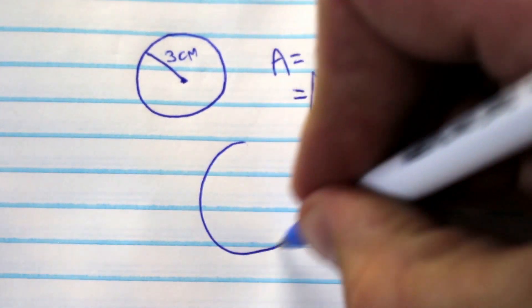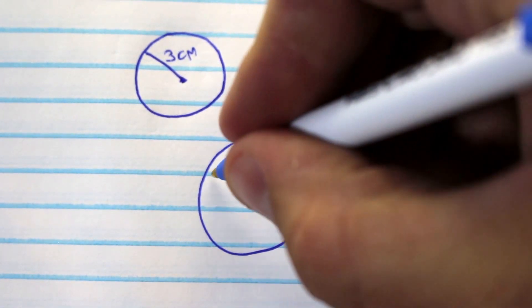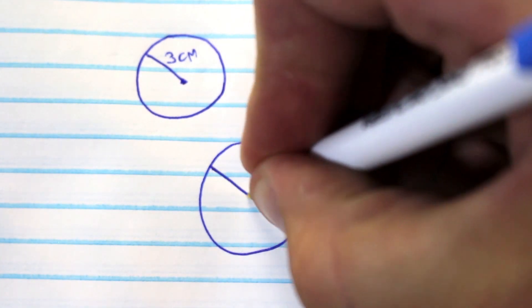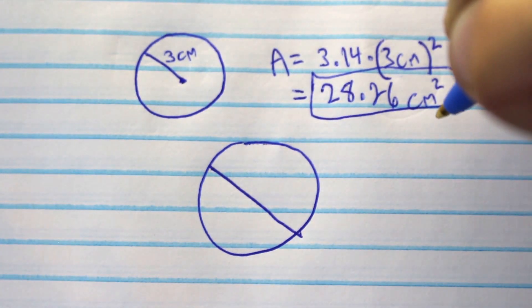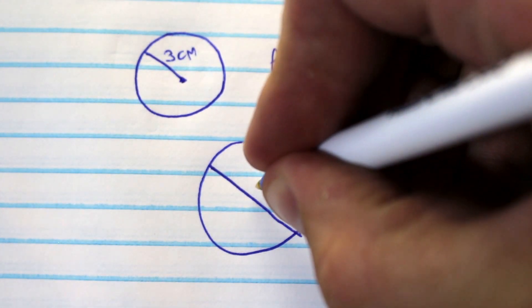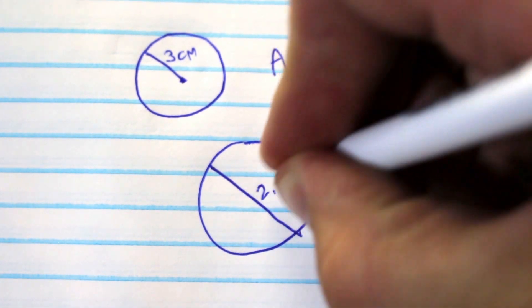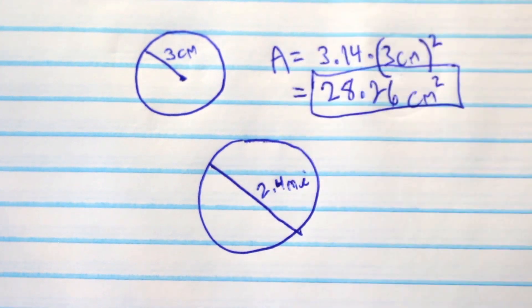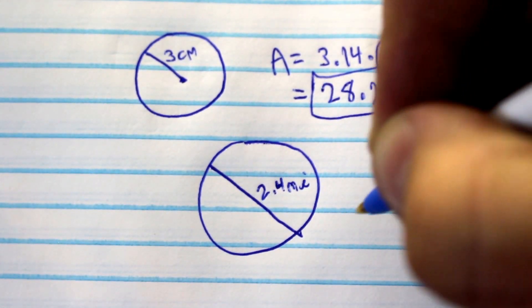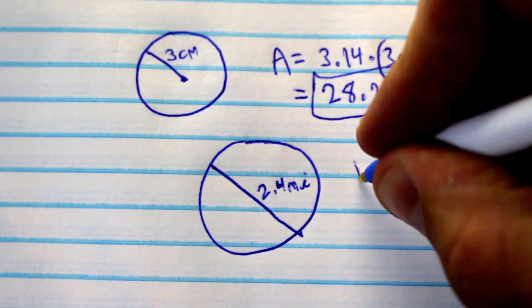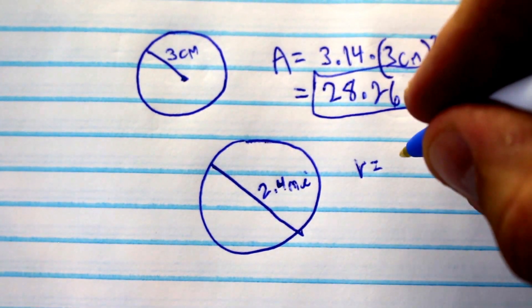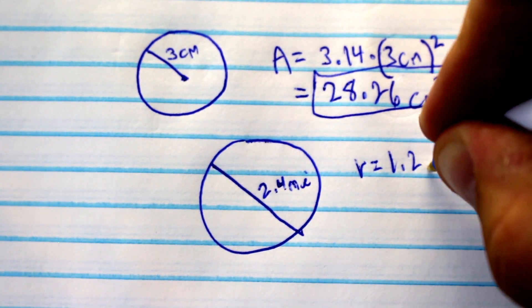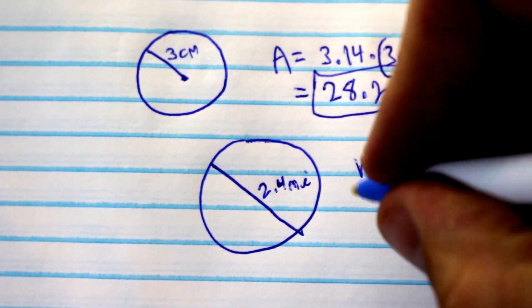Let's look at one more example. Let's say they don't give you a radius. They give you a diameter of 2.4. So the whole distance across this circle, the diameter, is 2.4 miles. The radius would equal half of that, 1.2 miles. So then we look at our equation again.